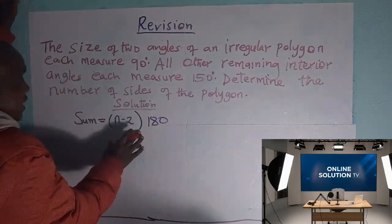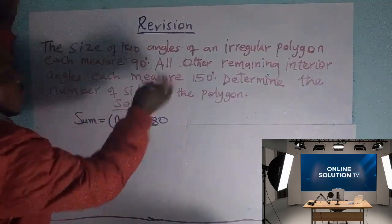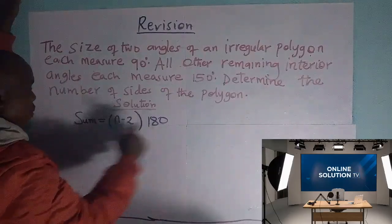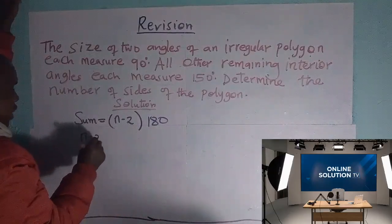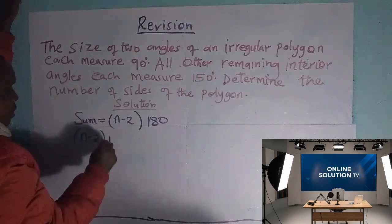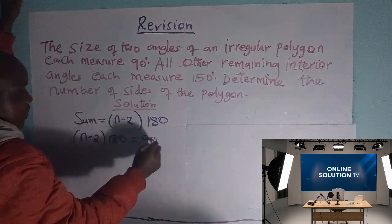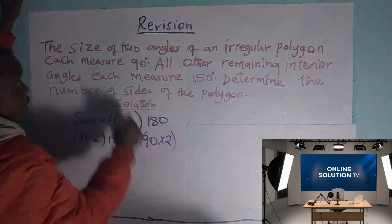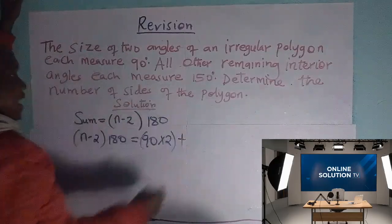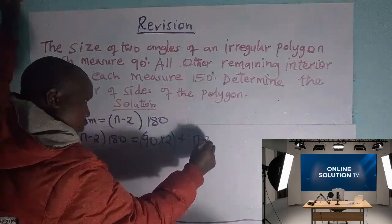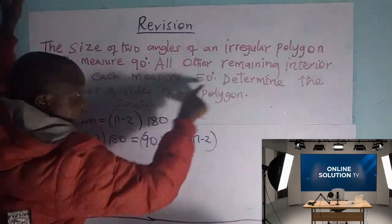Therefore, this will give us the sum of all the angles. It means that this sum, (n - 2) times 180, will be exactly equal to 90 times 2, because there are two of them, then plus the number of angles that are remaining, which is (n - 2) times 150 each.